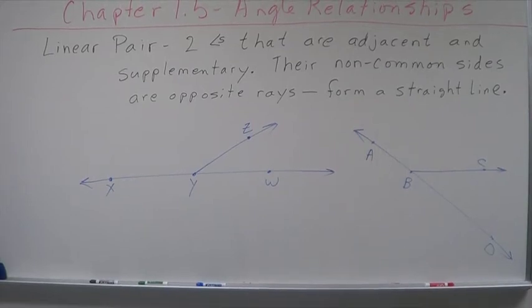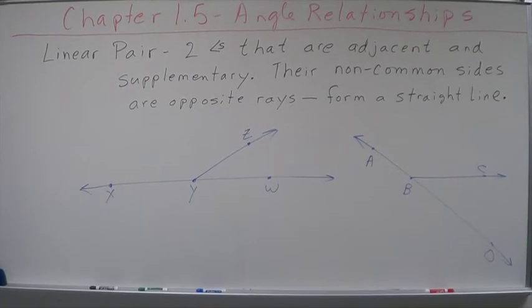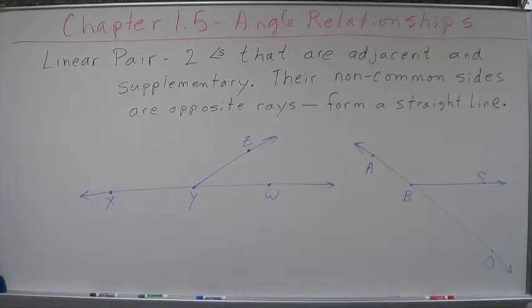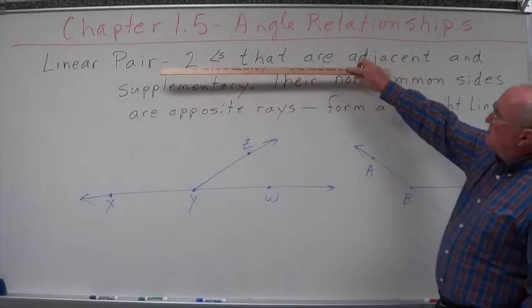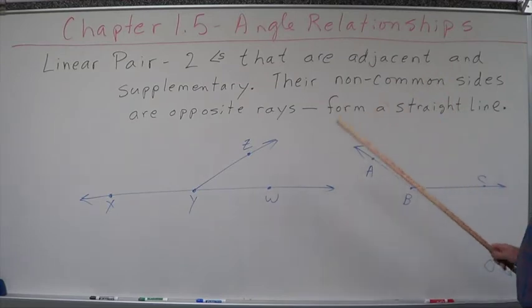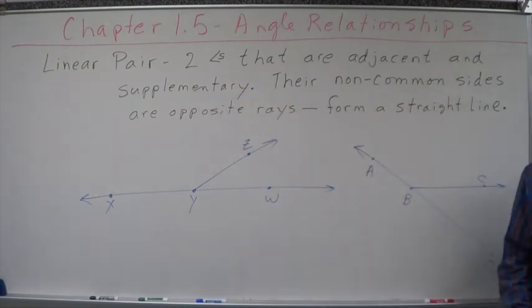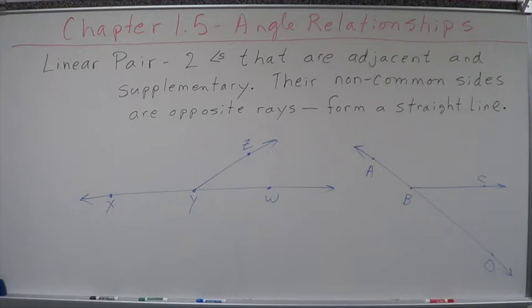Another set of angular relationships is called the linear pair. We just mentioned it in the last segment. A linear pair is two angles that are adjacent and supplementary. They must be adjacent, must share a side, must have a common vertex, and cannot have any common interior parts.